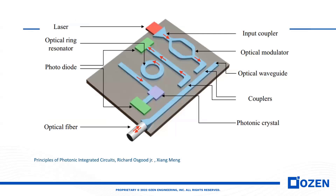This picture gives us an idea regarding the principle of a photonic integrated circuit. As you see here, we have a laser, then we have a modulator, then we have a coupler here, we have a waveguide here, and the light comes to the waveguide and then is coupled to this waveguide.